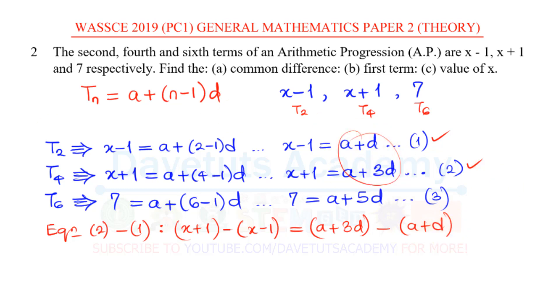If I have to simplify this, let me just open up the brackets, so this will be x+1 minus x, then this minus times this minus, they become plus, so I have plus 1, is equal to a+3d, and you're going to open this bracket, this will be minus a, and minus times plus, it will also be minus d.